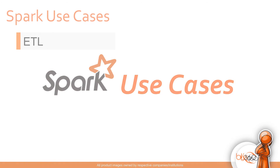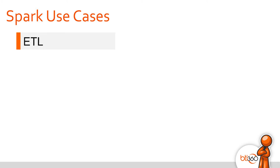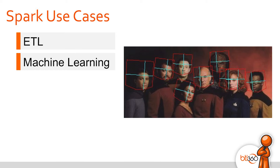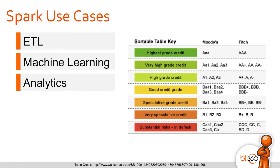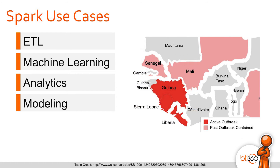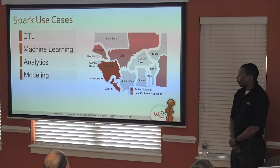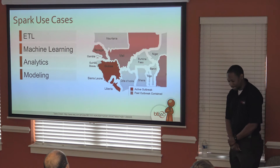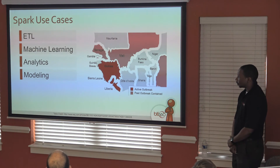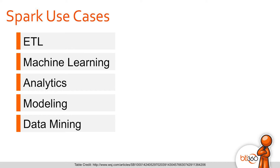What are some of the use cases for Spark? We have ETL — extract, transform, and load your data. We have machine learning, namely facial recognition, where you can learn based on past behavior who is who. We have analytics — based on a company's credit history, we can predict their credit history in the future. We have modeling — last year during the Ebola outbreak, data scientists used big data to determine where the next outbreak might occur and how to contain it. And also data mining — we're collecting logs for every transaction, and Spark helps us get information out of those logs.